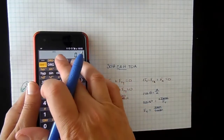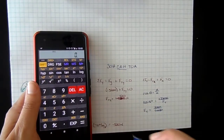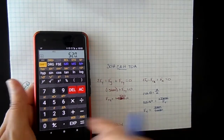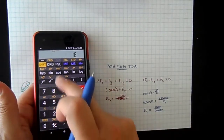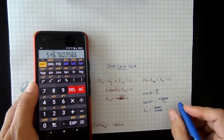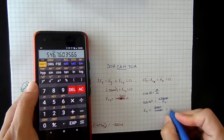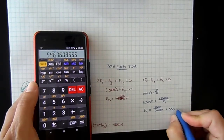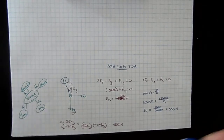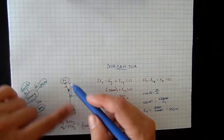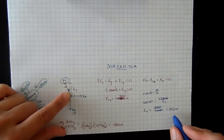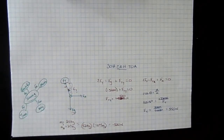We solve for the force of tension by taking 520 newtons divided by the cosine of 18 degrees. Make sure your calculator is in degrees, not radians. That gives us a tension force of 550 newtons in our rope. So the rope holding up the tire swing has a tension force of 550 newtons.